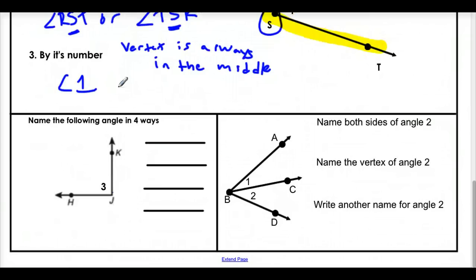Now let's do a little practice. Name the following angle in four ways. Well, let's start with the easy ones. We can name it by its vertex, which is just angle J. We could name it by its number. So that would be angle three. We could also name it by its sides and the vertex. So this would be angle K, J, H. And we could also name it going the other direction. So H, J, K.